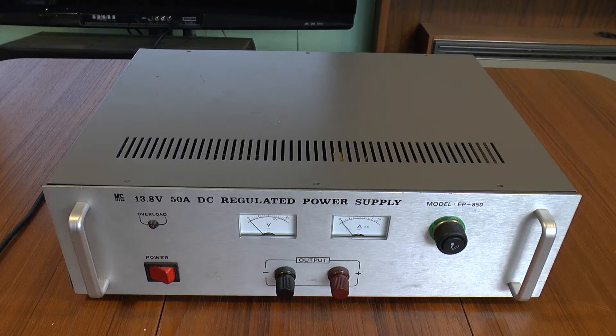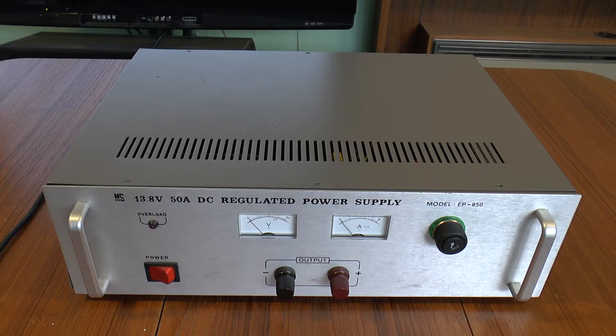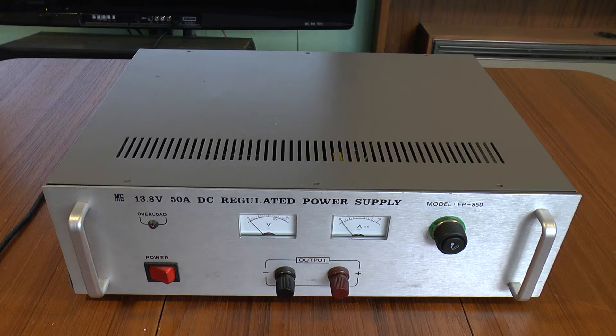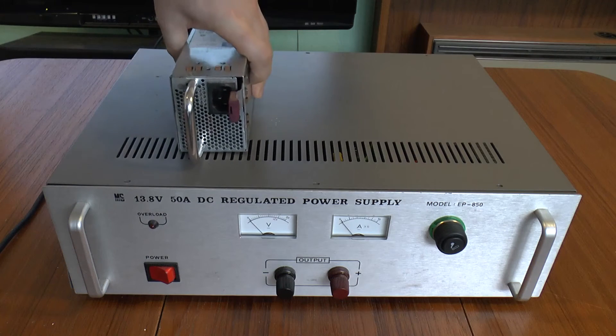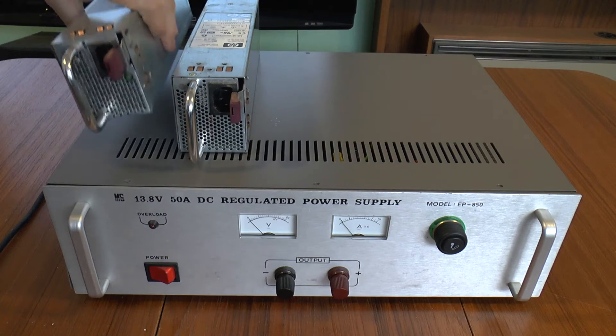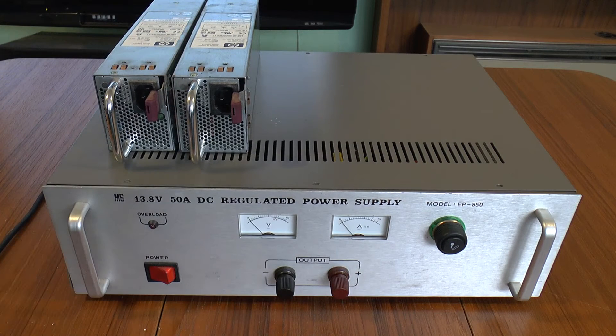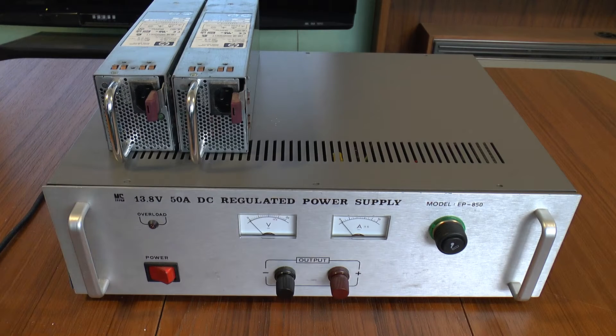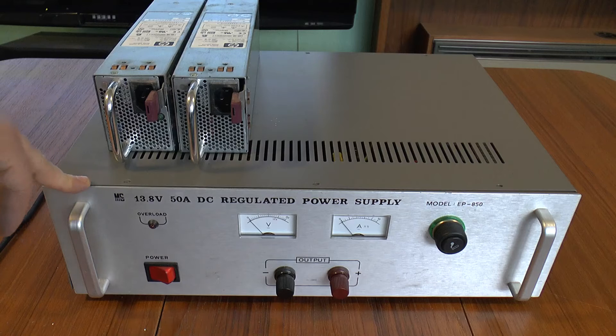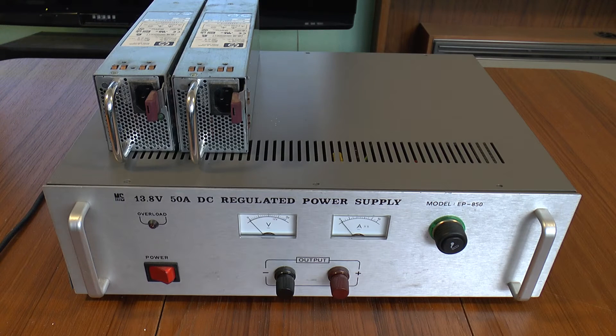Of course it's a linear power supply, the old transformer based stuff. If it was switch mode then it would be a little bit smaller. To give you some idea, these two supplies here will together output 12 volts at 64 amps. This can manage 40 amps continuous or 50 amps surge.